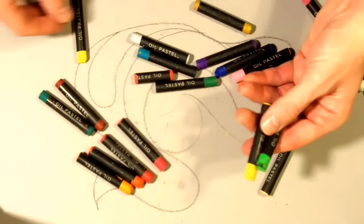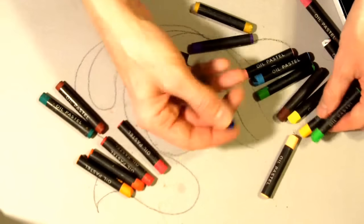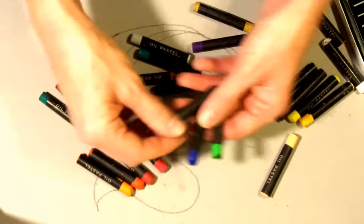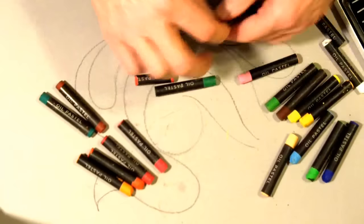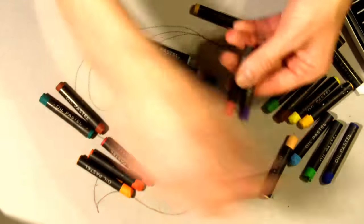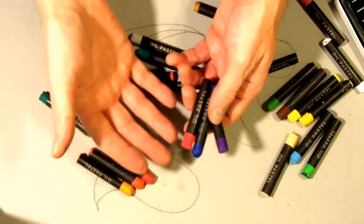If you wanted to go yellows and greens you could certainly do that. You could also go greens and blues. Those blend together nicely. Or you could go red, purple, blue. Pick colors that blend together naturally.